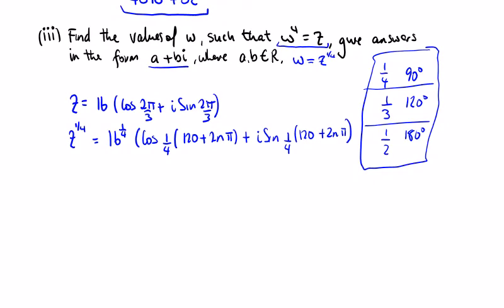16 to the power of a quarter is equal to 2 by the cos of a quarter of 120, which is 30, plus i sine 30. I'll write all the solutions first and then we'll write the answers here.